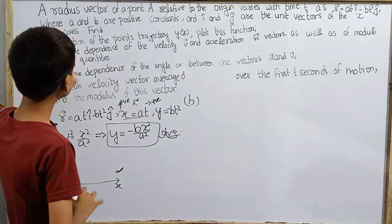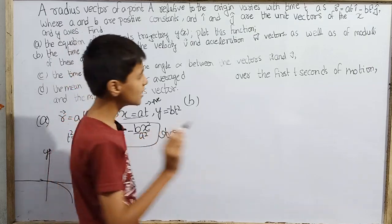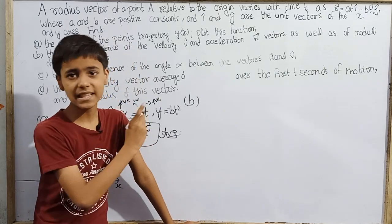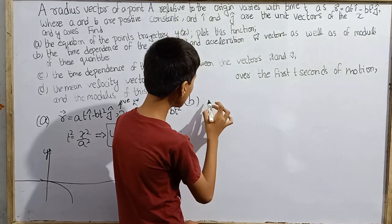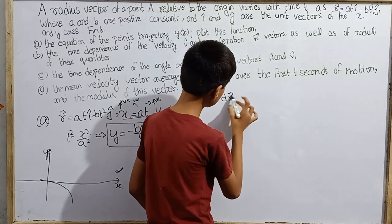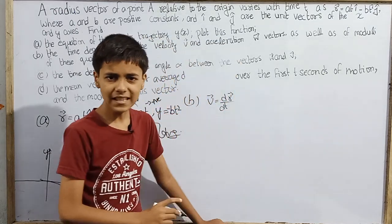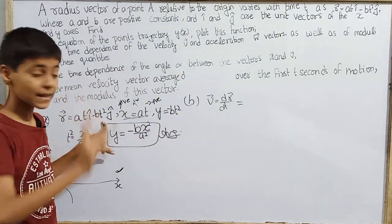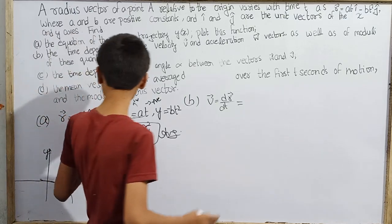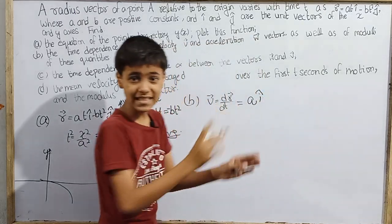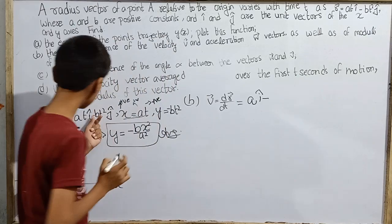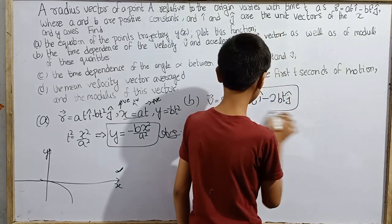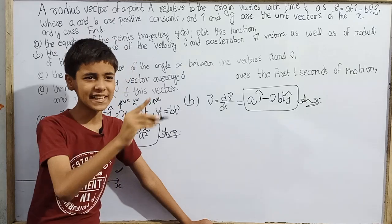Moving to part (b), the velocity vector v equals d(r vector)/dt. Differentiating a·t·î minus b·t²·ĵ with respect to time gives: vector v equals a·î minus 2b·t·ĵ. This is our velocity vector.